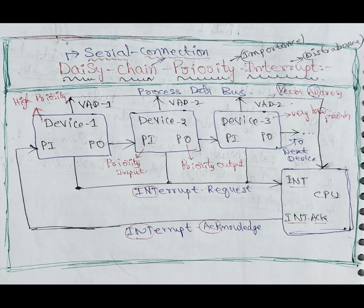Modes of data transfer is of three types: programmed input/output, interrupt-initiated, and direct memory access. DMA is very very important — I have already covered that. Interrupt-initiated is of two types: one is parallel priority interrupt, which I already covered, and the second one is daisy chain.